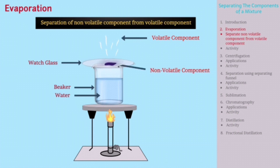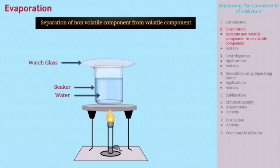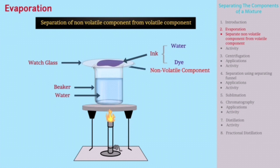The volatile component evaporates, leaving behind the non-volatile component in the mixture. For example, ink is made of dye and water. Dye, being non-volatile, gets separated from water during the process of evaporation.